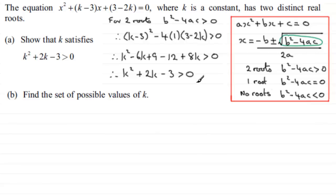Right, in part B, we've got to now find the set of possible values of k. We've got to solve this quadratic inequality. So we'll just put it down over here, that we've got k squared plus 2k minus 3, and it's greater than 0.